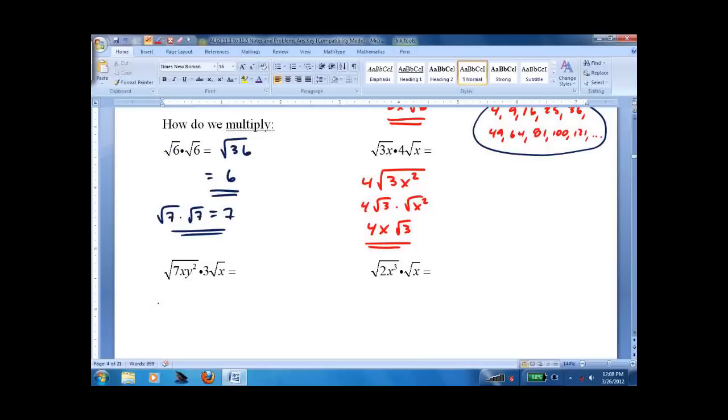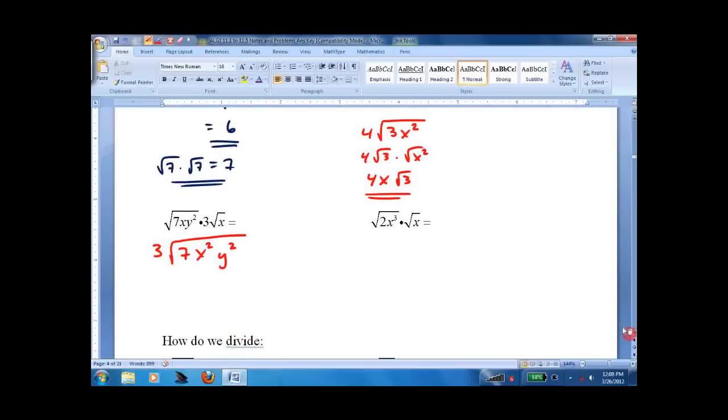This one the 3 is out front so leave it, everything else cram together, 7 x squared y squared. We can break that down into root 7 root x squared root y squared, xy root 7.